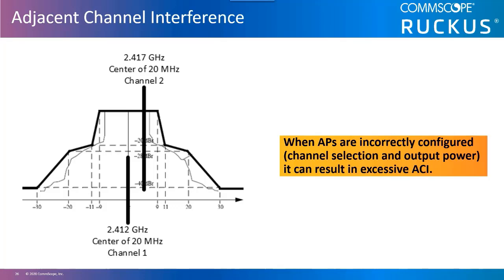Adjacent channel interference, or ACI, is caused when channels overlap by design — like 2.4 GHz channels — or when non-overlapping channels cause side-lobe interference, like 5 GHz channels. 2.4 GHz channels are 5 MHz apart on their center frequency and 20 or 22 MHz wide depending upon the modulation techniques used. Therefore, it is a certainty that adjacent channels will overlap and cause interference in 2.4 GHz. In the image shown here, we have an overlay of the center frequency for channel 1 and channel 2. When adjacent channels overlap, they cause ACI, which can manifest as corrupt frames or simply prevent communications due to energy detected in 2.4 GHz. In 2.4 GHz, ACI can be prevented within your controlled networks by using channels 1, 6, and 11.